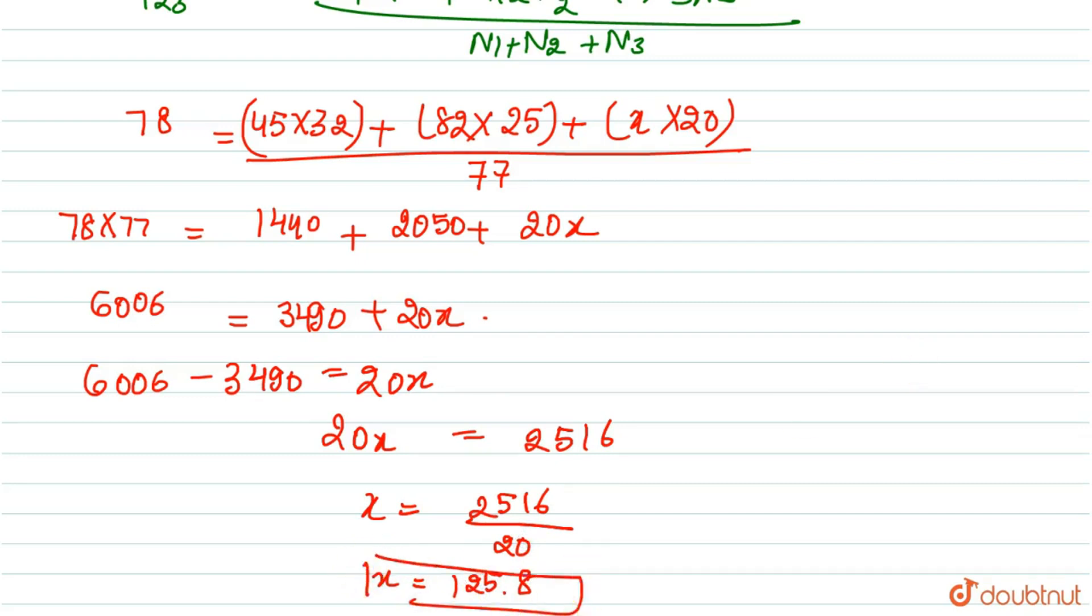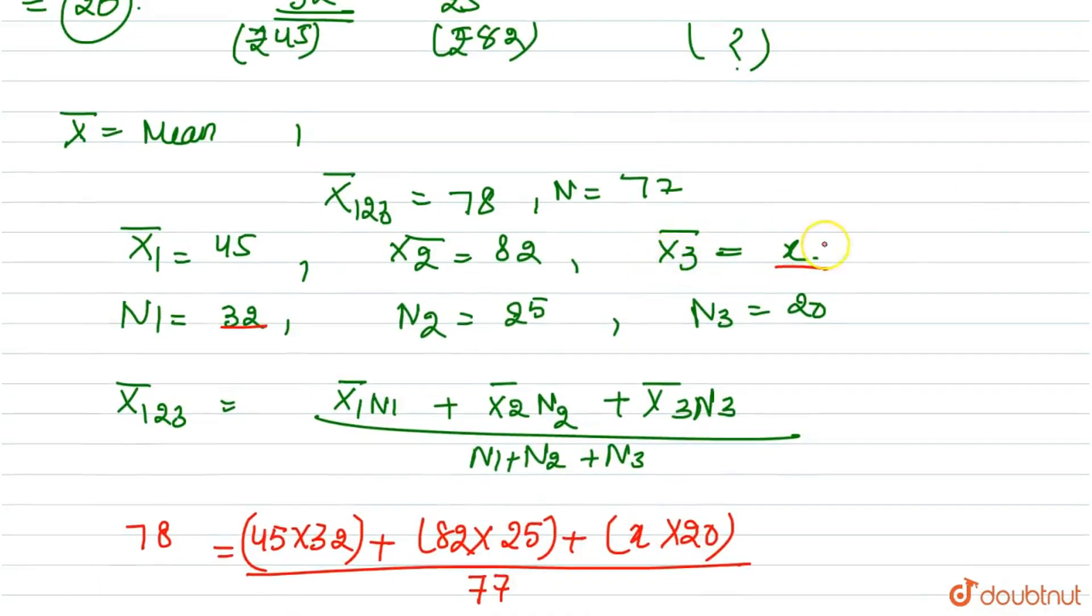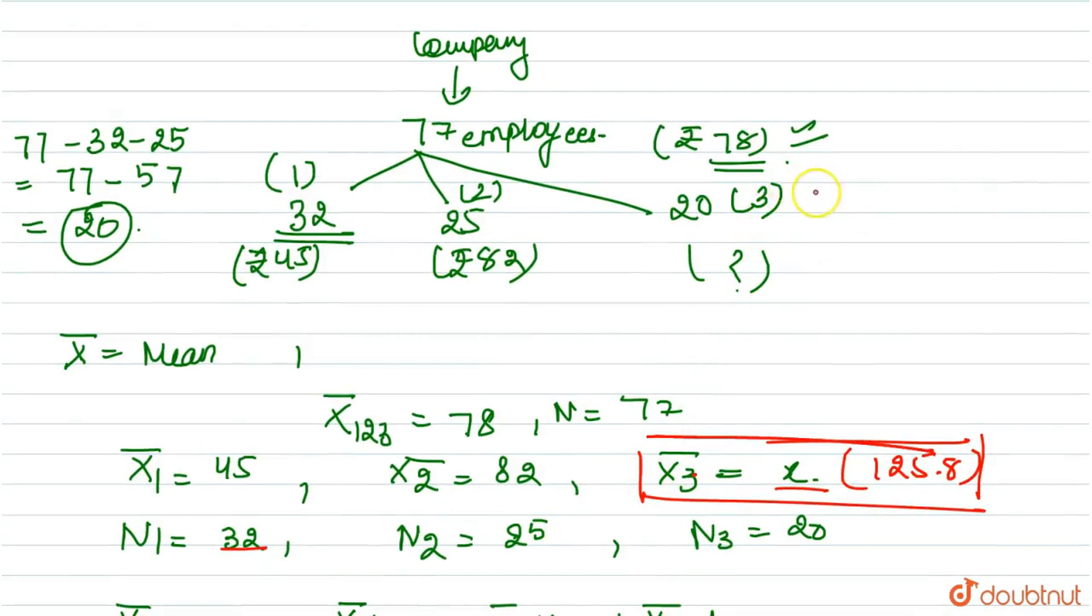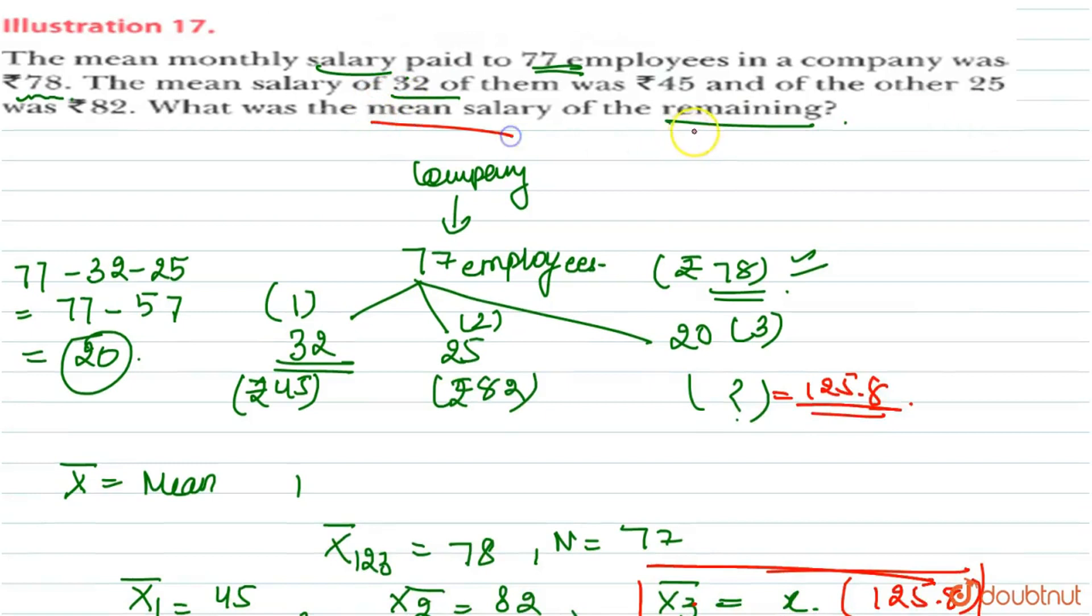And what did we take x as? x3 bar. So 125.8 is our x3 bar. What was x3 bar? Average of 20 employees. 20 employees' salary average is 125.8. And this is what we had to calculate, mean salary of the remaining, which is 20 employees' mean salary is 125.8. Thank you so much.